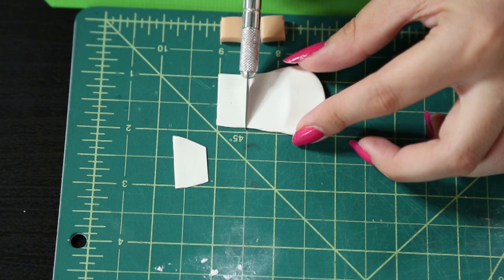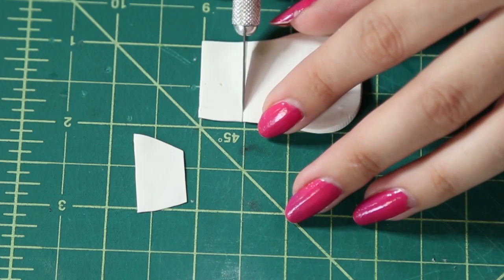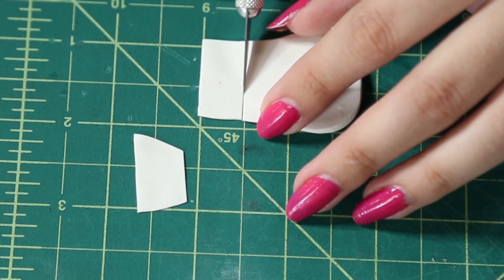So this is going to be the frosting for the cake. I'm just eyeballing this. If you want to be precise you can really get the roller out and do some measurements.